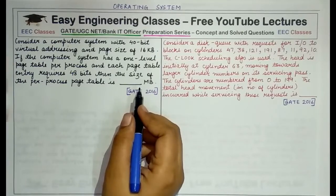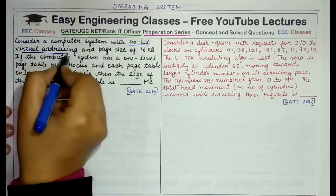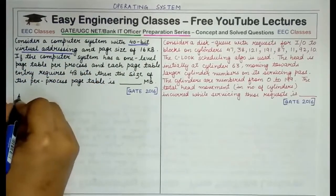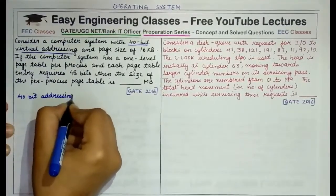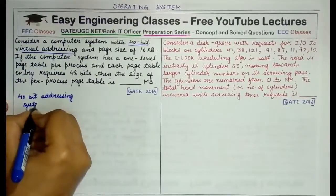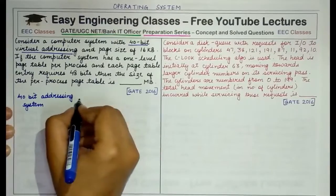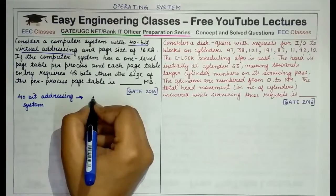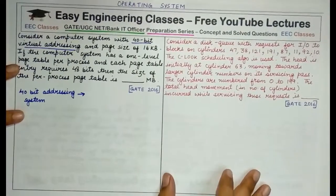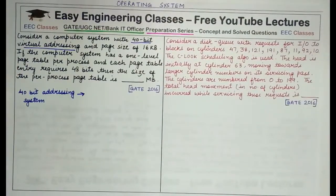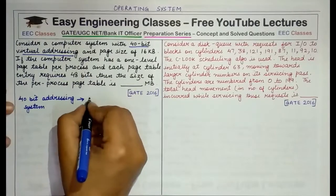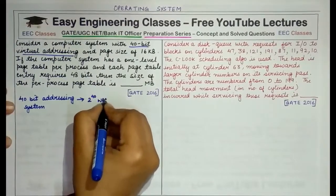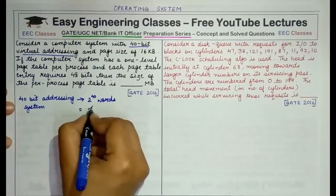Since it is given that it is a 40-bit virtual addressing system, the total address space present is 2 raised to the power 40. With 40 different bits, the total address space that can be provided is 2 raised to the power 40 — that is, 2^40 combinations are possible, which is equivalent to 2^40 bytes.